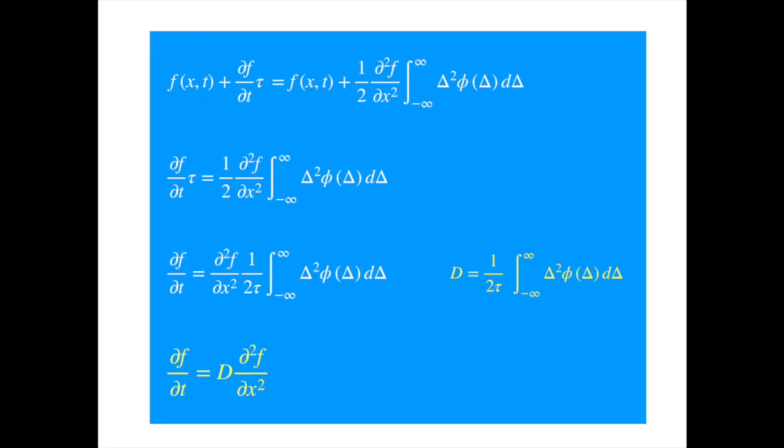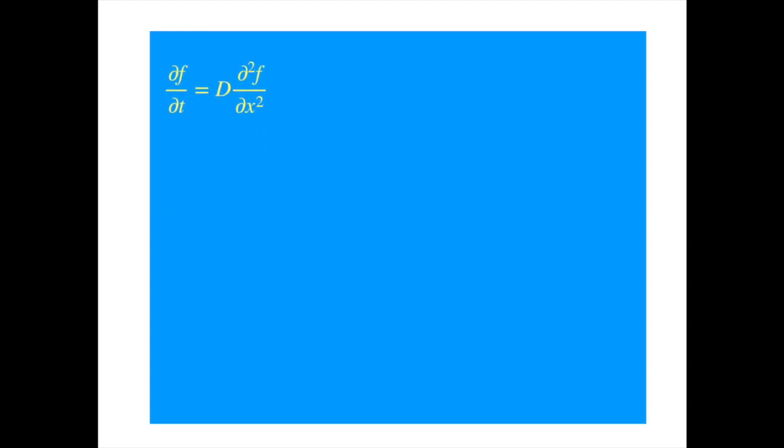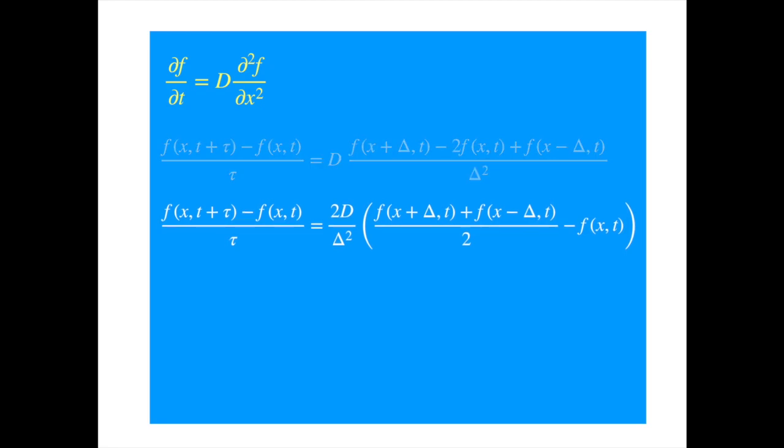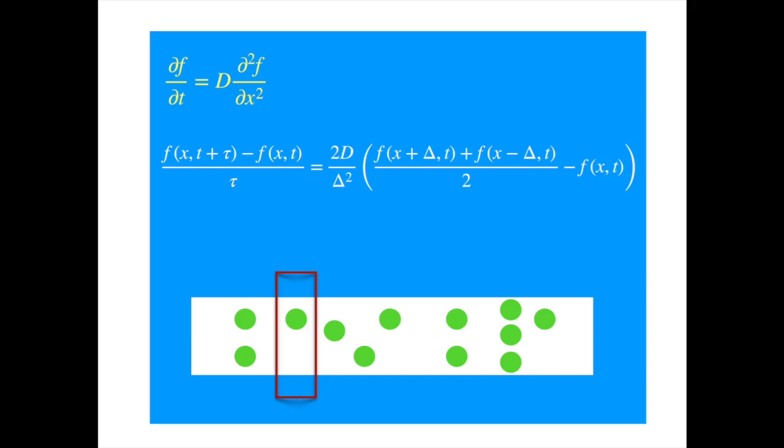Now to see what this equation means in terms of the distribution of the Brownian particles across the x-axis, let's replace the derivative by the finite difference approximation. We can rearrange the terms on the right hand side.